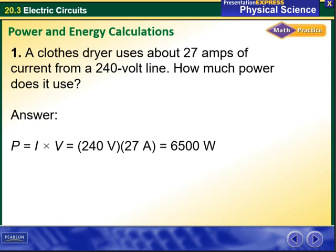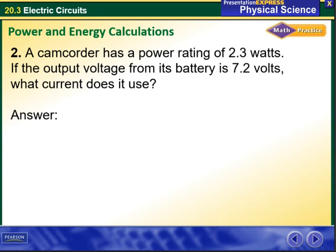For example here, current is given and voltage is given as well. So power equals current times voltage. We multiply them together, and we have the power which is measured in watts.